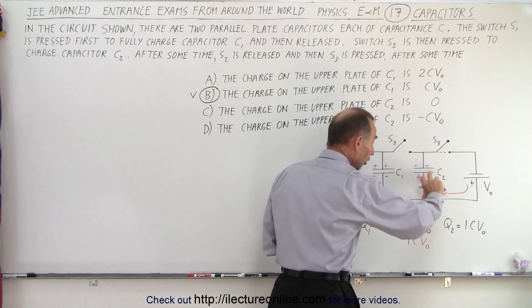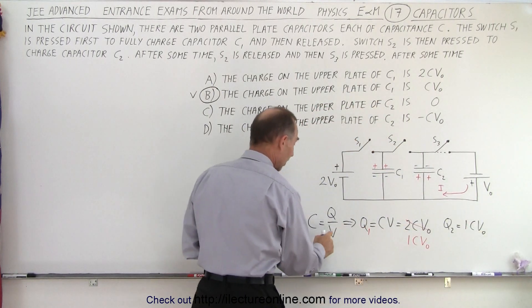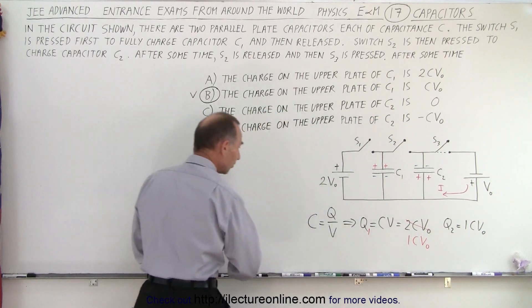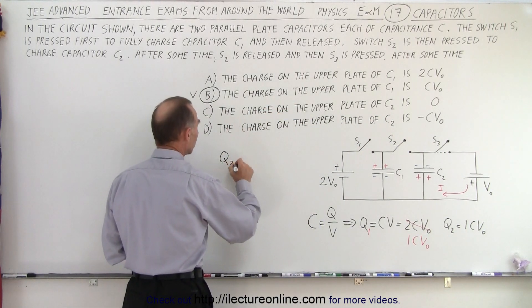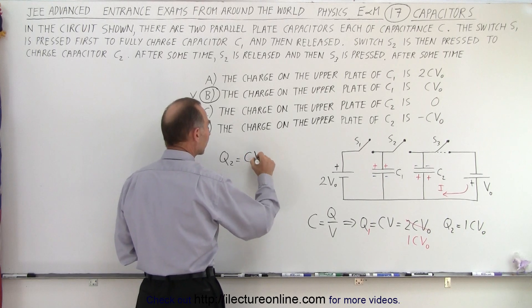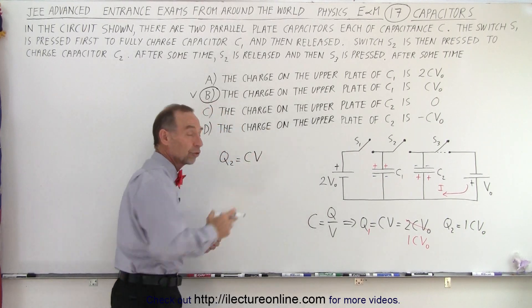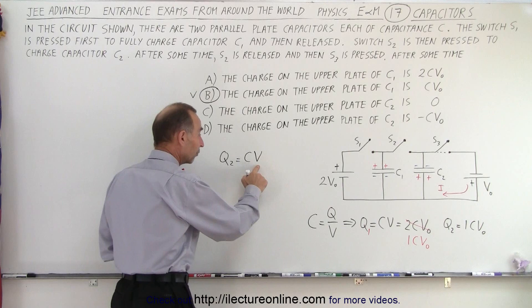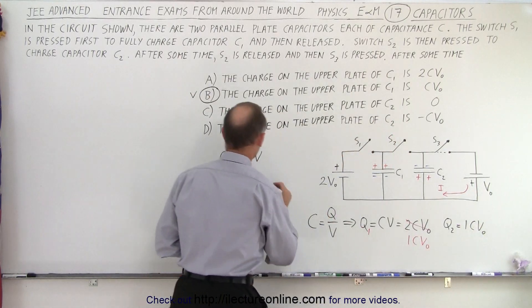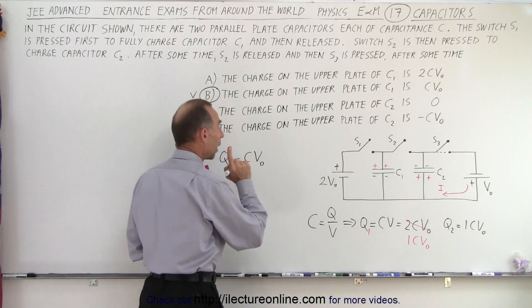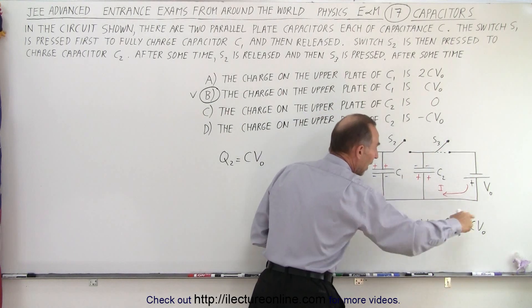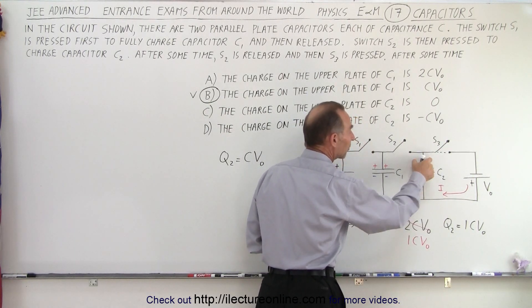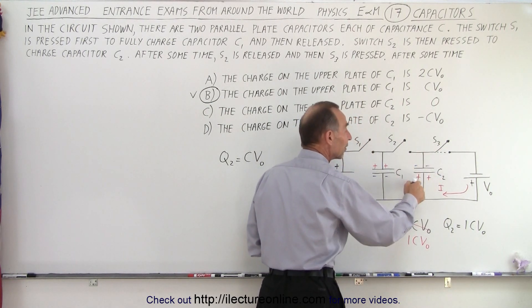Now notice how much charge will be collected here. Again we use the same equation. We can say that Q2 is equal to the capacitance of Q2 times the voltage that drives the charge onto the capacitor. In this case the voltage is V₀. So it'll be CV₀. However it'll be on the bottom side of the capacitor. The top side of the capacitor will be the negative CV₀.